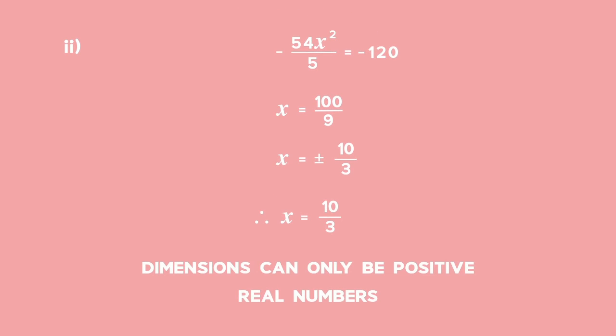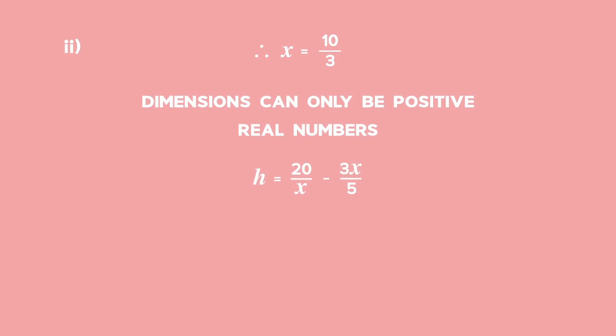Since dimensions can only be positive real numbers, x = 10/3. To find the dimensions, substitute into the formula to find h. h = 20/(10/3) - 3(10/3)/5. The height of the box is 4 centimetres.